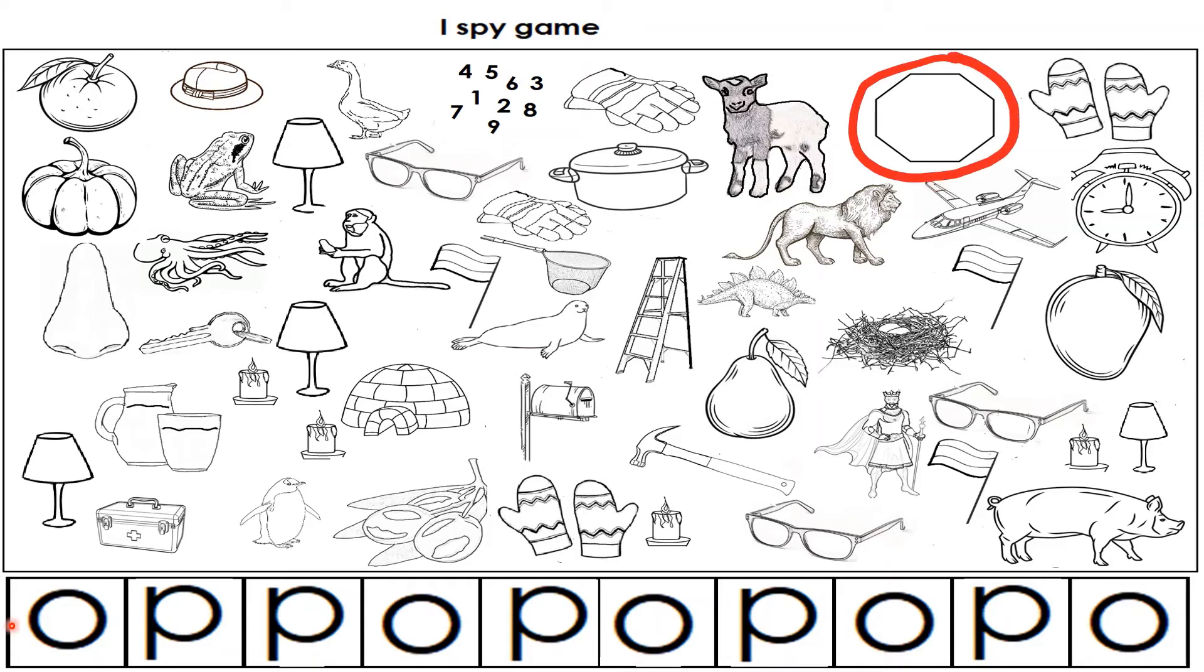Now we are going to circle this O because we are done with it. I spy with my little eye something start with P. Let's find something start with P.